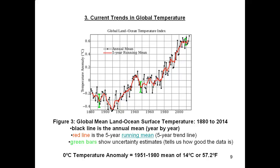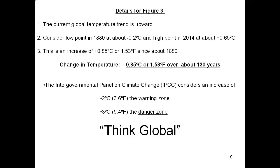You will notice that the annual mean — the black line — goes up and down over periods of years to decades. This can be caused by such things as El Niño-La Niña events, large volcanic eruptions, and atmospheric and ocean current variations. The current global temperature trend is upward. Consider a low point in 1880 of about minus 0.2 degrees Celsius, and a high point in 2014 at about plus 0.65 degrees Celsius. This is an overall increase of 0.85 degrees Celsius, or 1.53 degrees Fahrenheit, since about 1880. The IPCC considers an increase of 2 degrees Celsius to be the warning zone, and 3 degrees Celsius to be the danger zone.